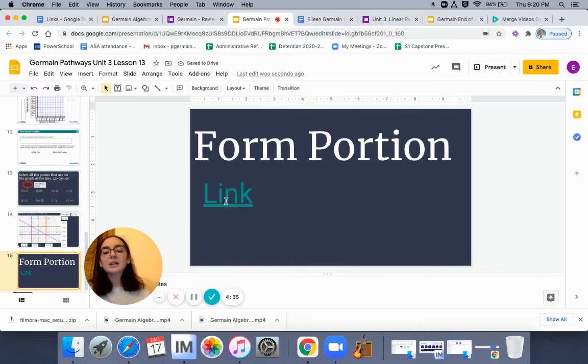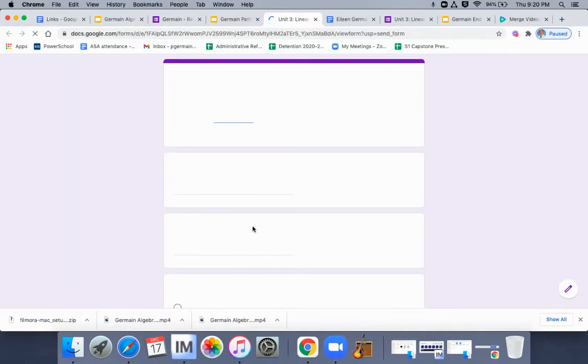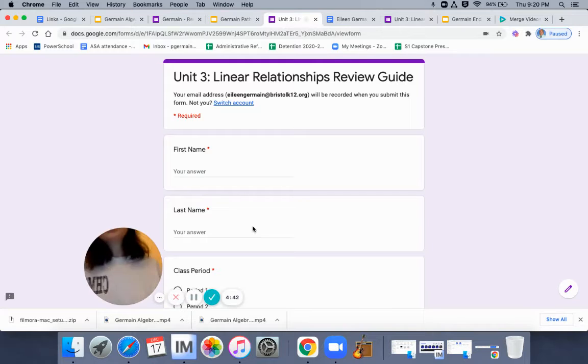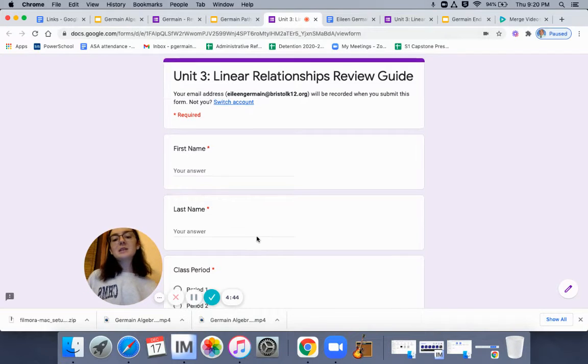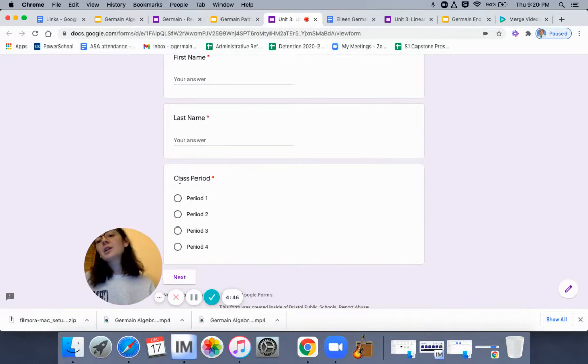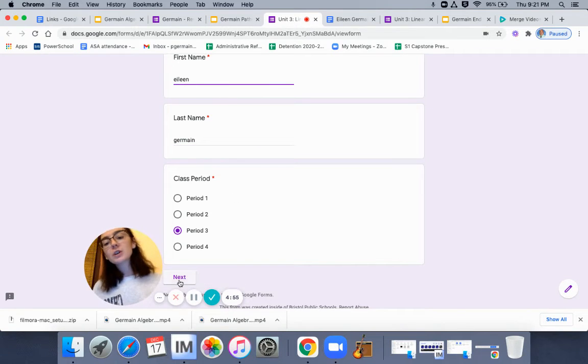The Google Forms portion, you're going to click on that link on slide number 15. It's going to take you to this Google Forms, and it's going to look nice and pretty, first name, last name, class period. I'm going to change that to cohort number, though, because that's how I sort of talk about it.